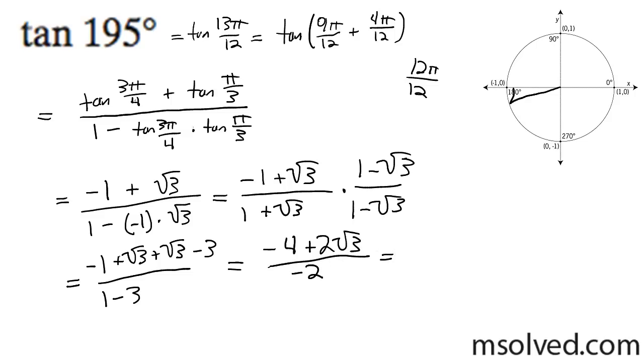And we can pull out negative 2 out of everything, so we get 2 minus root 3 over negative 2. These cancel out, and your final answer is going to be 2 minus root 3.